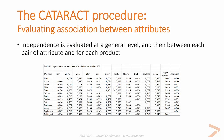Here is an example of a pairwise comparison between attributes for a given product. We can see that 'juicy' and 'firm' have their null hypothesis of independence rejected, meaning that for that product they can be considered as redundant.